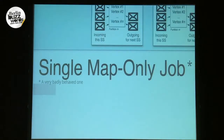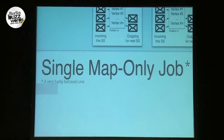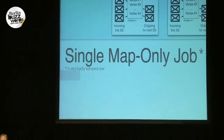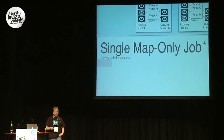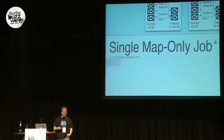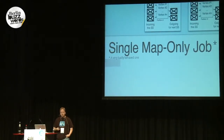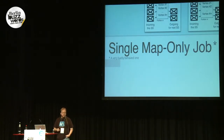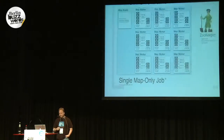There's one master and everybody else is a worker. This is a very badly behaved map-only job — about the worst you'll ever see. Giraph requires all mappers to be up and running at the same time, and the entire graph must fit into memory. If you start a Giraph job requiring 1,000 workers and you can only get 999 of them, the job won't start until you get the last one. So while this is done as a MapReduce job, it's a very bad one.